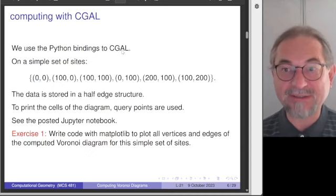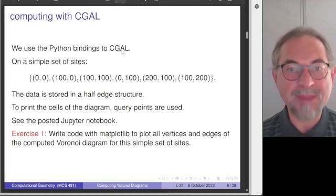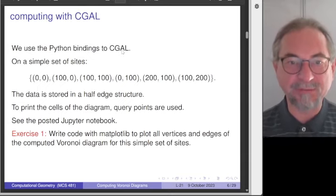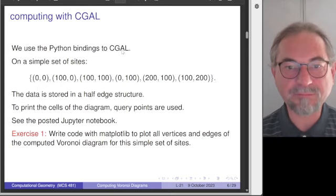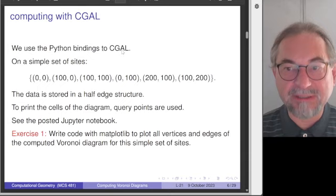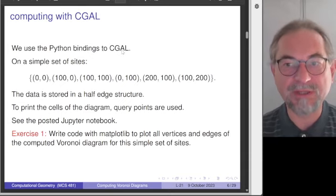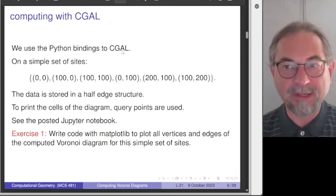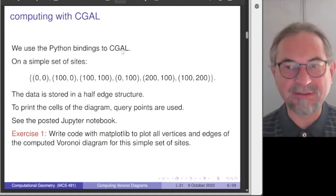Last time I introduced the SciPy construction for quickly generating Voronoi diagrams. We are also using the CGAL library. I took the documentation of the Python bindings and slightly modified it. We have a simple set of six points in the plane. The data that CGAL computes will be stored in a half-edge structure. To get information out of the computed Voronoi diagram, you work with queries — you use the query point at each site to get the description of the face.